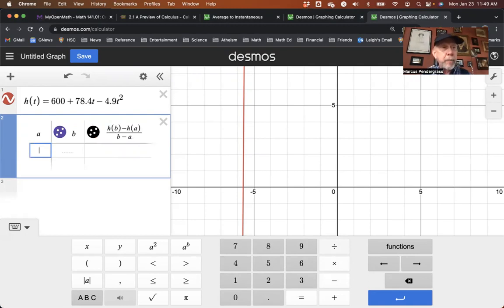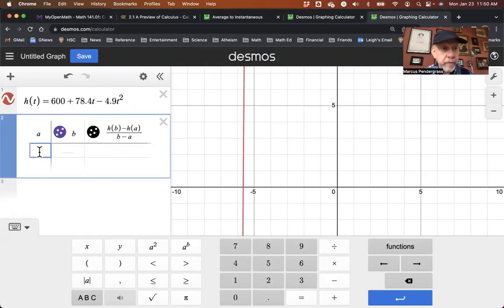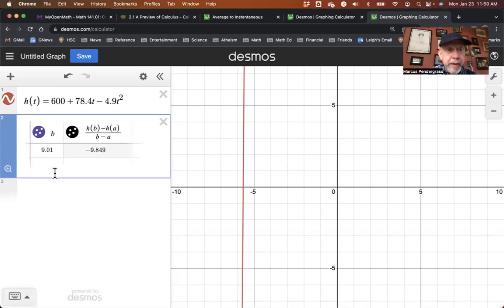And now I'm ready to enter in the intervals that I want. So going back to the problem, the first interval was from 9 to 9.01. So let's go ahead and enter that in. My A is 9 and my B is 9.01. And there you see it, my third column in my table is giving me that average rate of change. So three decimal places, it's minus 9.849.